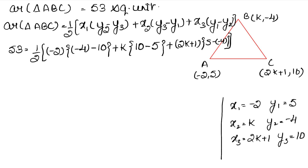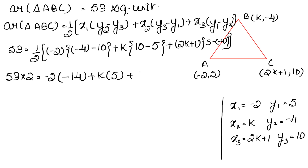तो ये कितना आ गया? 2 अधर जाके multiply हो जाएगा 53 के साथ, तो 53 into 2 equals to। Bracket open करते हैं: minus 2 into देखिए minus 4 minus 10 दोनों minus हैं तो आपस में plus हो गए, plus k — 10 में से 5 गया तो 5 — plus 2k plus 1 into 5 plus 4 is 9। Bracket open करते हैं: 2 into 3 is 6, 2 into 5 is 10।